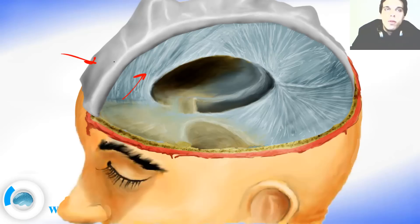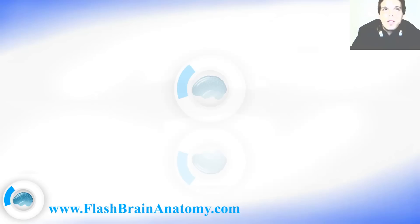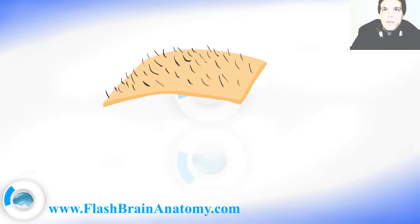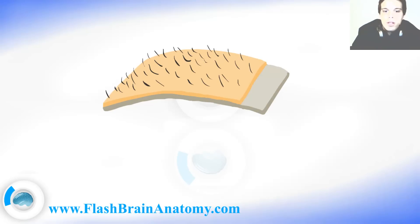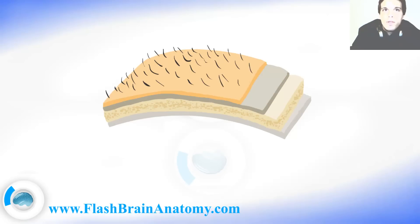You probably wonder how this is possible and how it looks. Let me illustrate it like this. We had a skin, then we had a periosteum, then comes the bone, and then comes the first layer of Dura mater. This is the periosteal layer of Dura mater, over here.